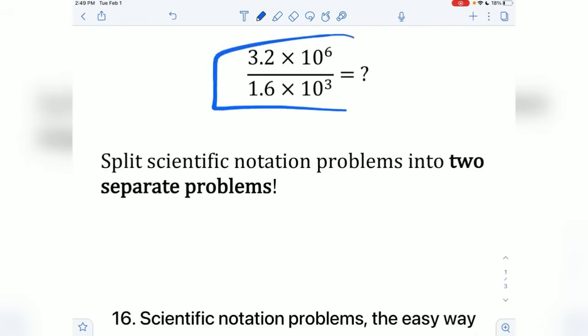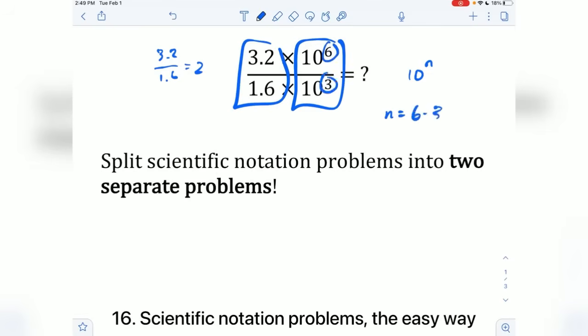Scientific notation problems, what you can do is just treat it as two different problems. The first problem is just solving the decimal part, so doing 3.2 divided by 1.6, which is obviously equal to 2. And the second half of the problem is where you're going to get some exponent 10 to the n. But that n value is just going to be the top exponent 6 minus the bottom exponent 3. So your answer is 2 times 10 to the 3. You treat it as two separate problems.